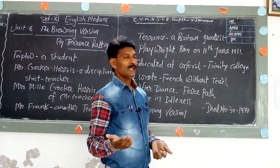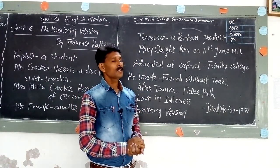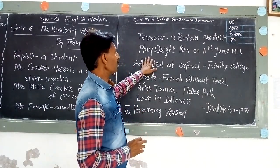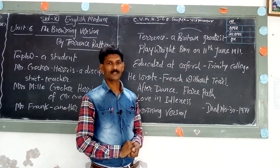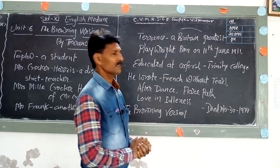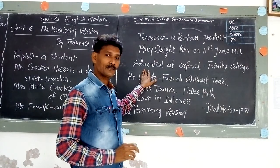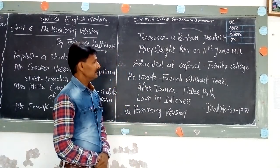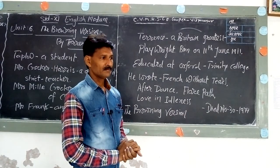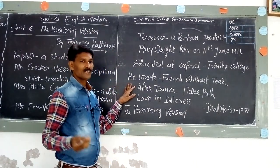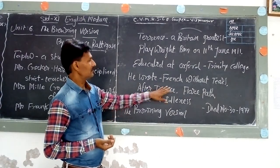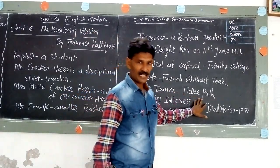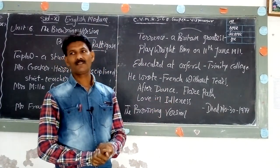Being an Englishman, he wrote so many plays in English because of his command over the language and his interest in plays. He was also educated at Oxford in Trinity College. Among his notable plays are French Without Tears, After Dance, Flare Path, and Love in Idleness.